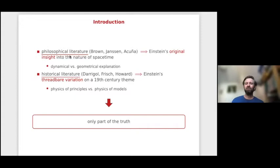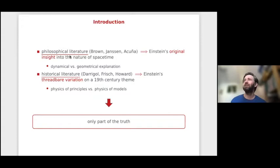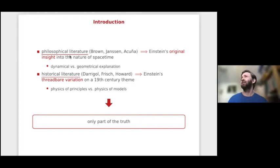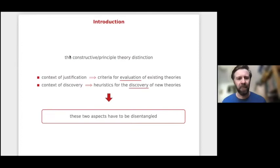Around this paper a debate about dynamical versus geometrical explanation in space-time theory has been constructed and is still going on. In the historical literature, on the opposite side, there are those who say it is a trivial paper with nothing original — the distinction is well known and can be found in a very old paper by Lorentz. The physics of principles opposed to the physics of models was well-known stuff. Both tendencies only capture part of the truth.